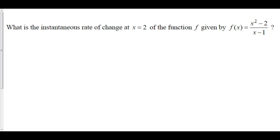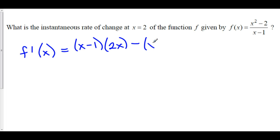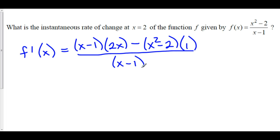What is the instantaneous rate of change at x equals 2 of the function f given by f of x equals x squared minus 2 over x minus 1? Instantaneous rate of change implies derivative. We want the derivative at x equals 2. To take the derivative of f, we have to use quotient rule because we have a polynomial over another polynomial. So: low d high — we've got x minus 1 times the derivative of the top, which is 2x, minus high d low. Our high is x squared minus 2. D low, the derivative of the bottom, is just 1, all over low squared below — that's x minus 1 quantity squared.